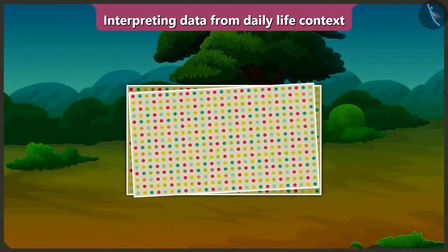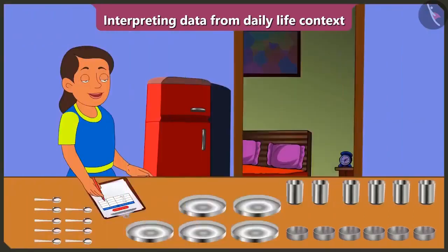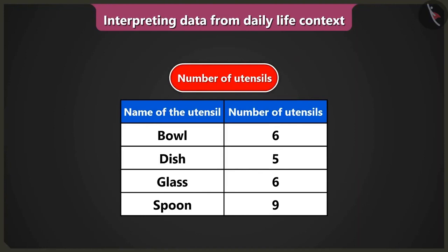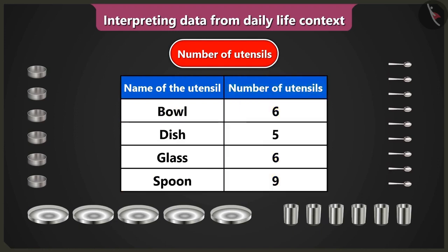Children, in this video we will learn how to interpret data from the table using interesting examples. I know how to fill the table. Now I will try to interpret data from the table. The data about utensils we have is given in this table. The data about the names of the utensils is given in the first column and the number of utensils is given in the second column.